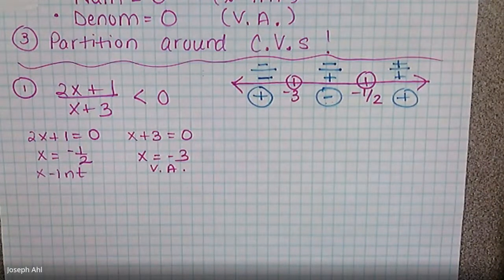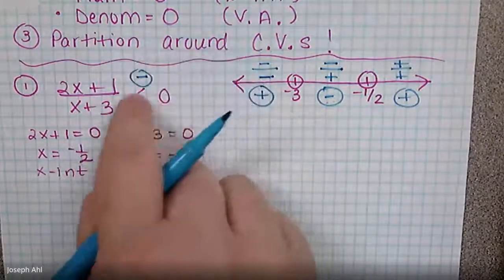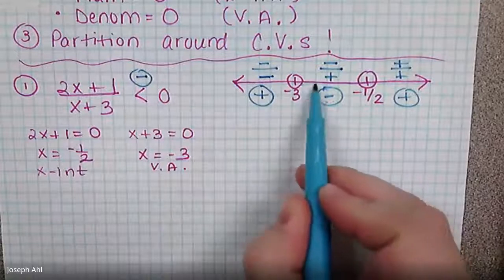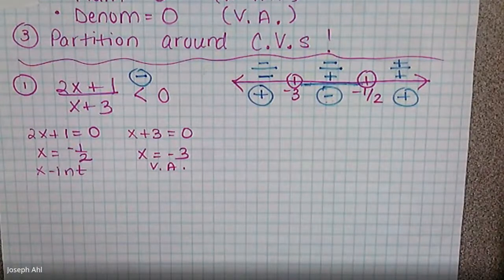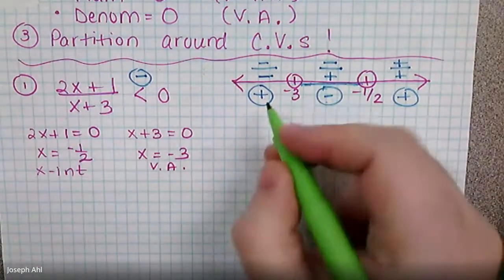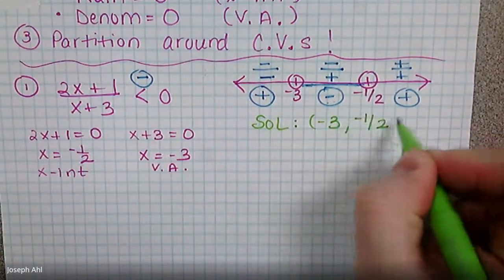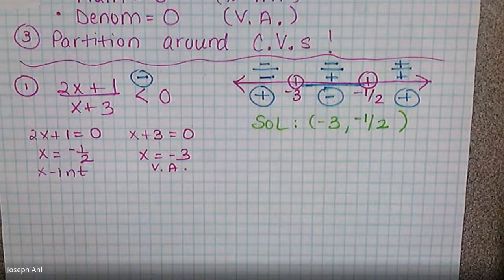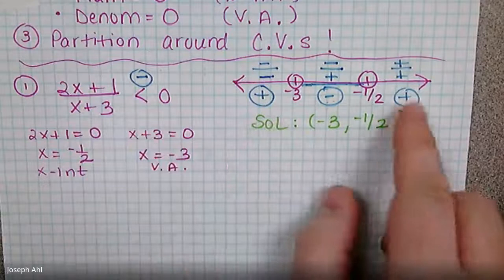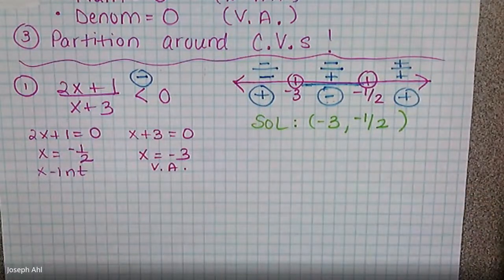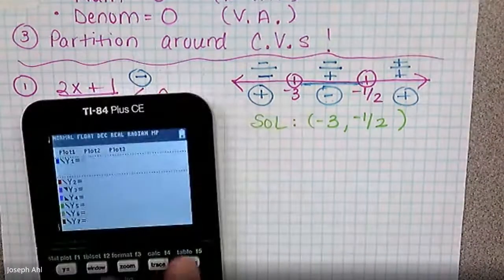We're looking for when this is less than zero, so we shade everything between negative three and negative one-half. The solution set is everything from negative three to negative one-half — can't include either. The vertical asymptote is never included, but if the inequality said less than or equal to zero, we'd include the x-intercept with a bracket. Let's verify this graphically just to make sure we're on the right track.